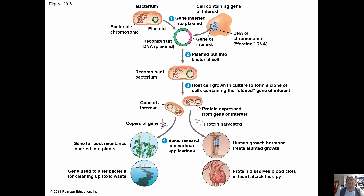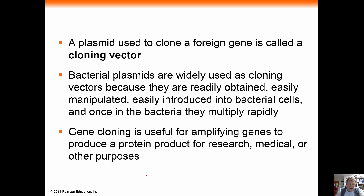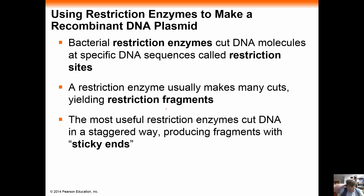We can take a plasmid or vector DNA — something that will hold our DNA — put our particular gene of interest into it, and then put that into human beings, into corn, or use it to clean up oil spills. A cloning vector is a plasmid used to clone a foreign gene. These bacterial plasmid vectors are very widely available; in fact we could probably use them in the lab.